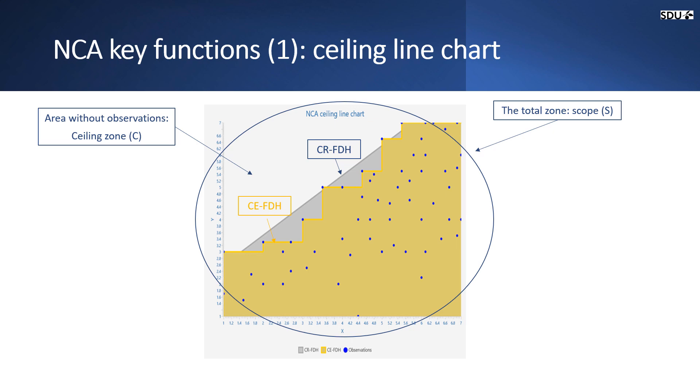The CE-FDH ceiling line is recommended for discrete data or when the pattern of the observations near the ceiling line is irregular. The CR-FDH line is recommended for continuous data or when the patterns of the observations near the ceiling line is approximately linear.